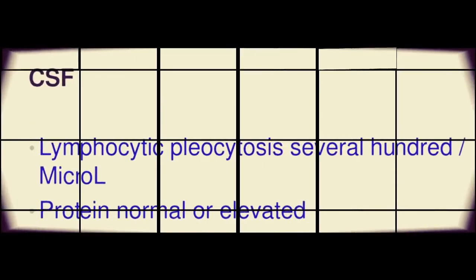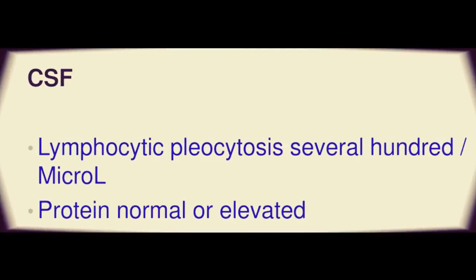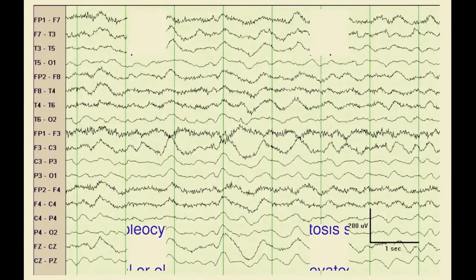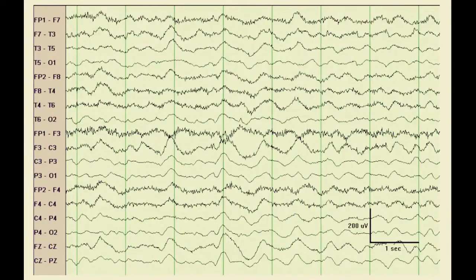The cerebrospinal fluid is frequently abnormal, showing an increase in white cells and protein. The electroencephalogram (EEG) is also abnormal in most cases, showing diffuse slowing.